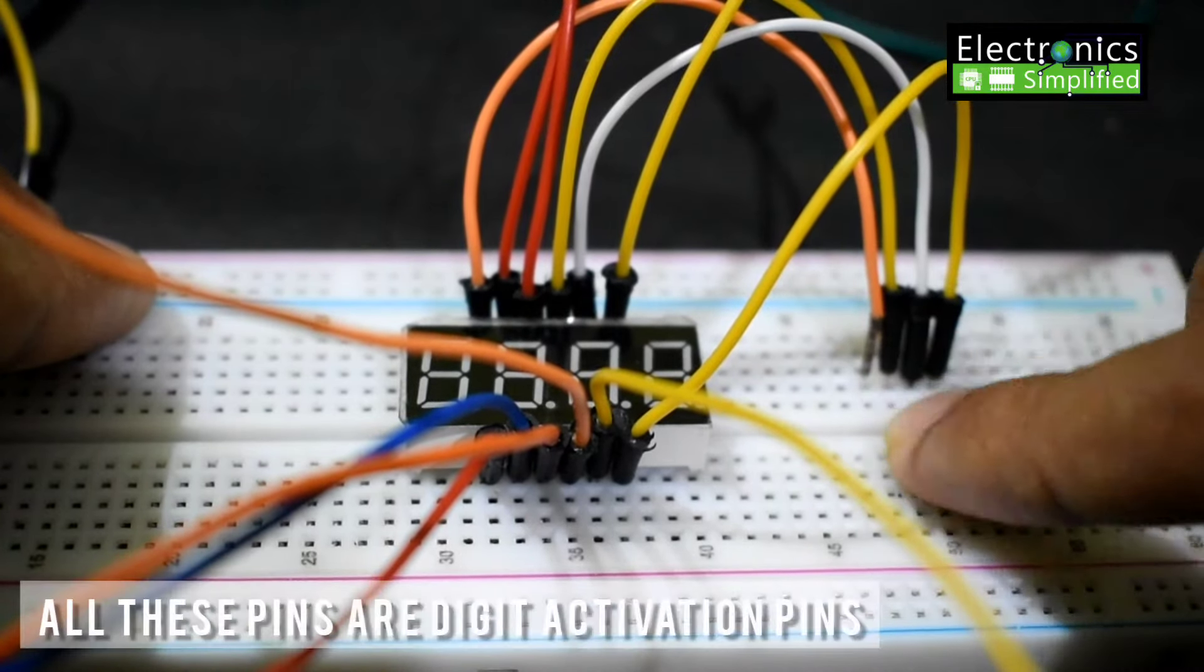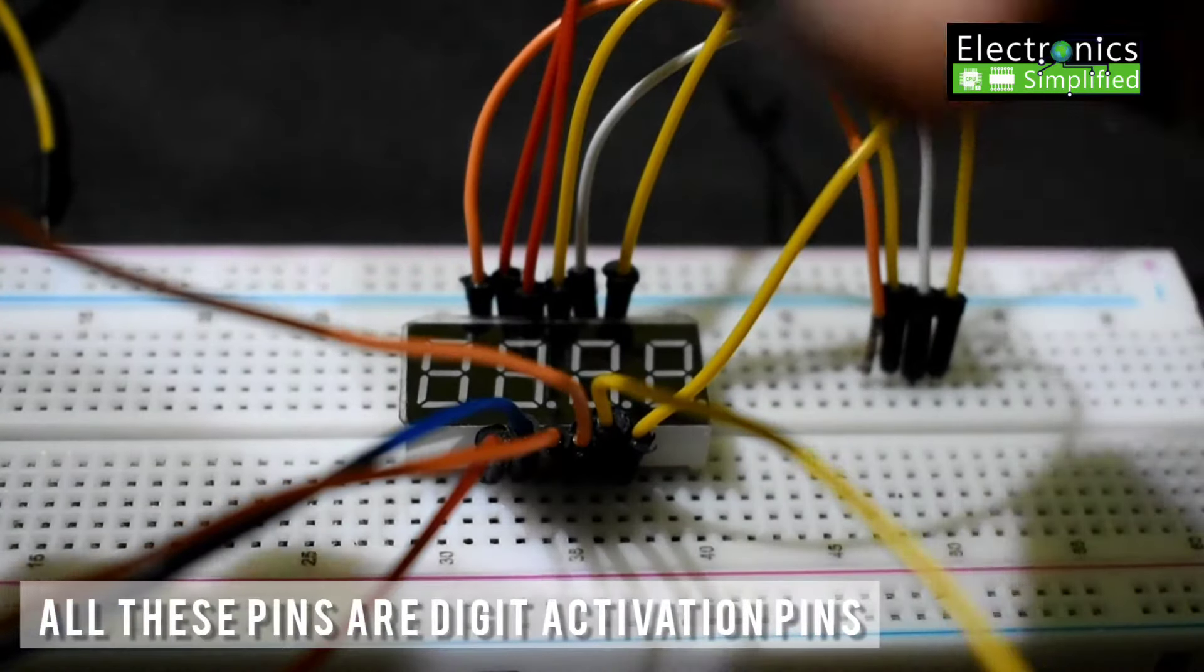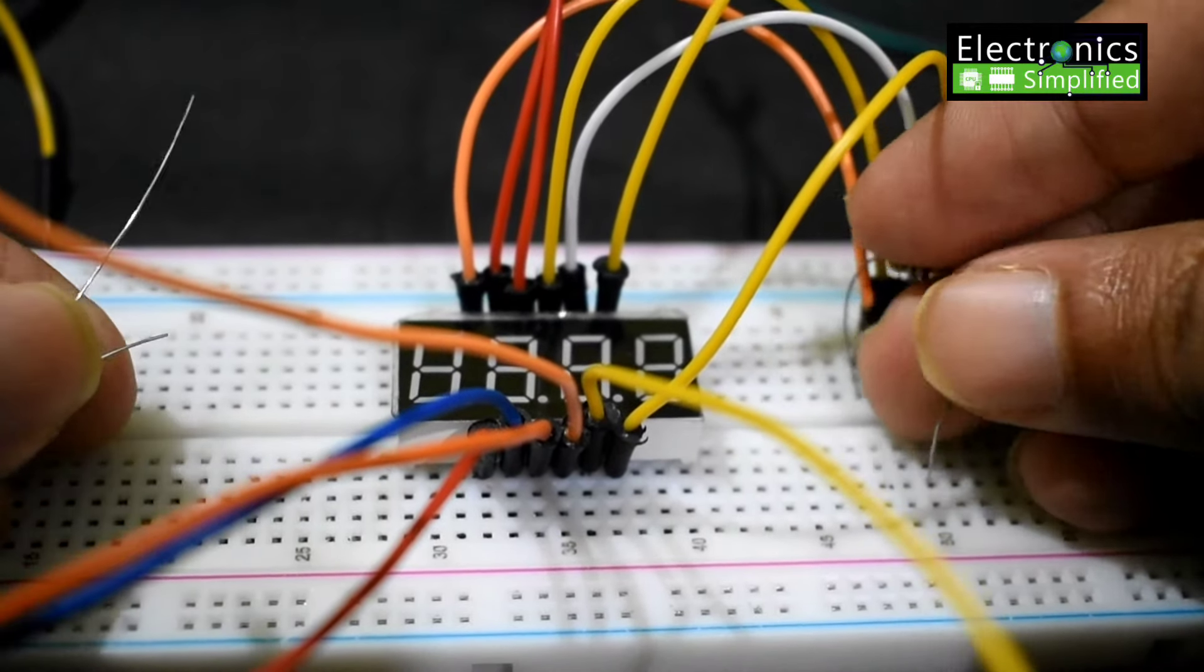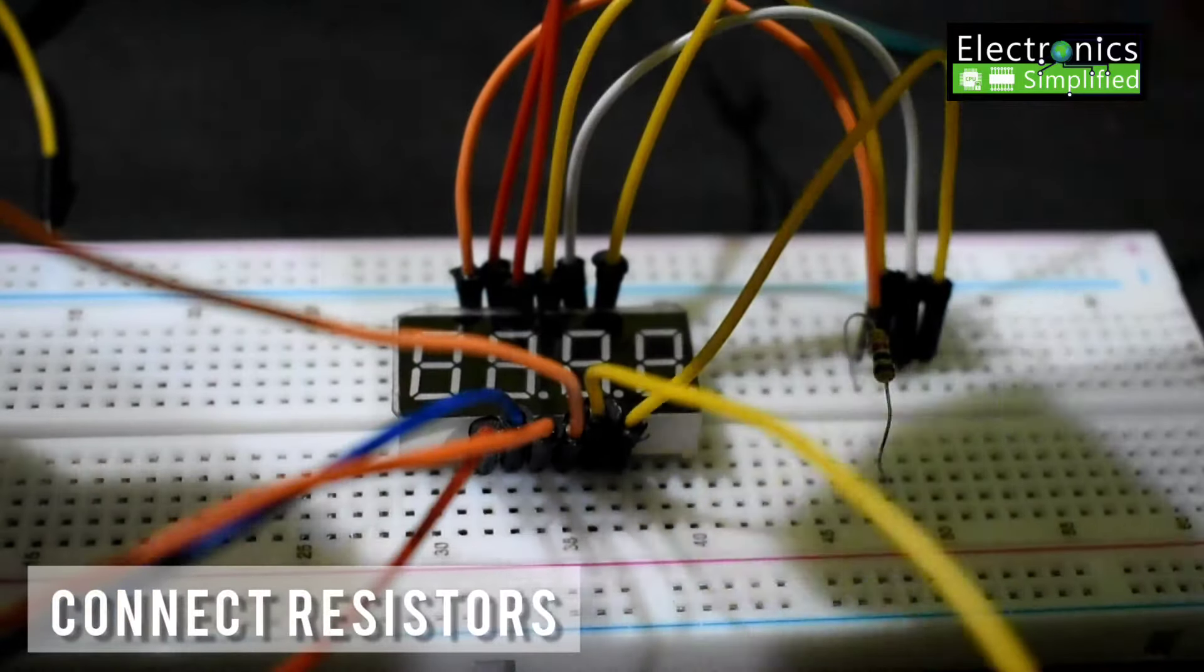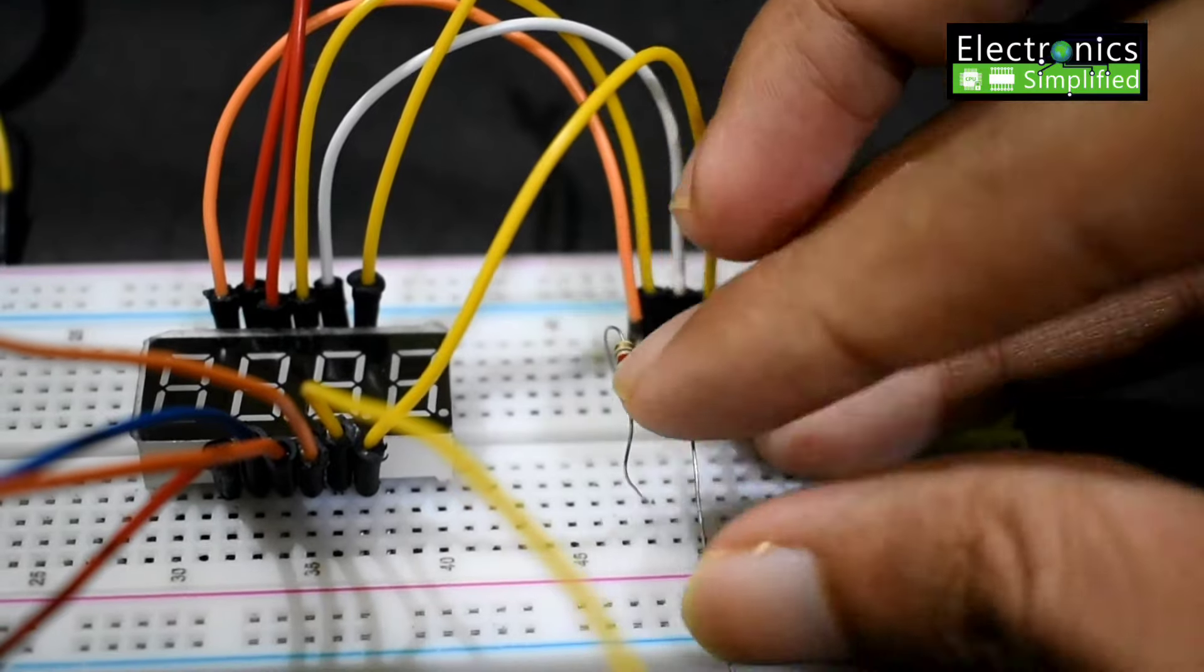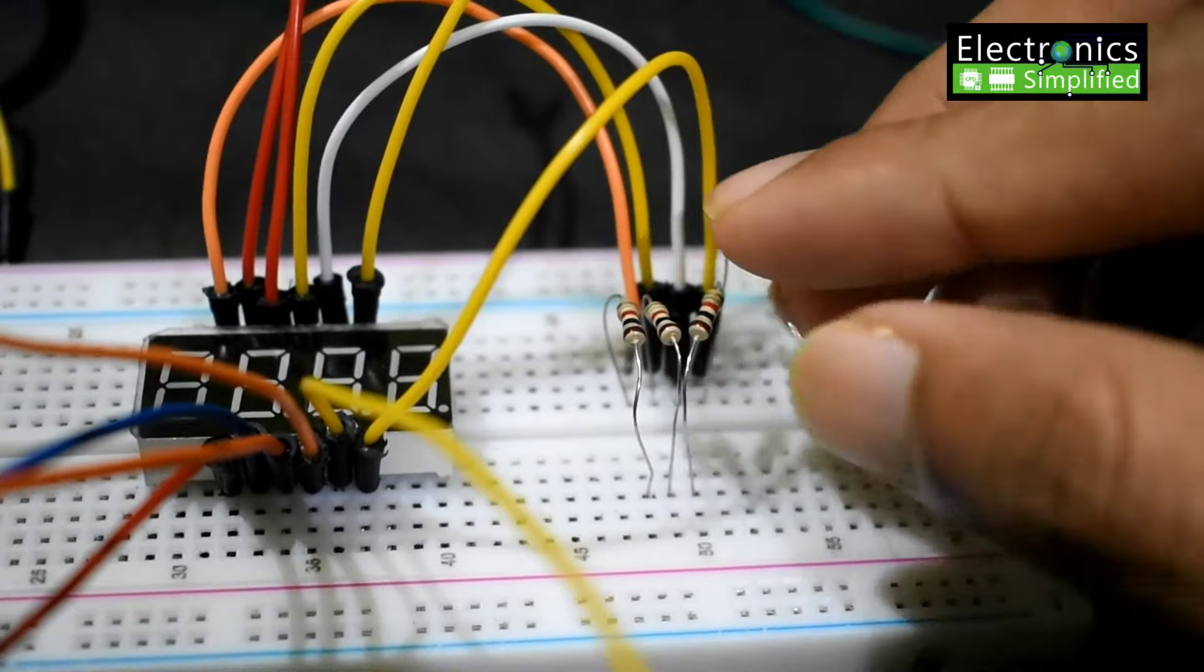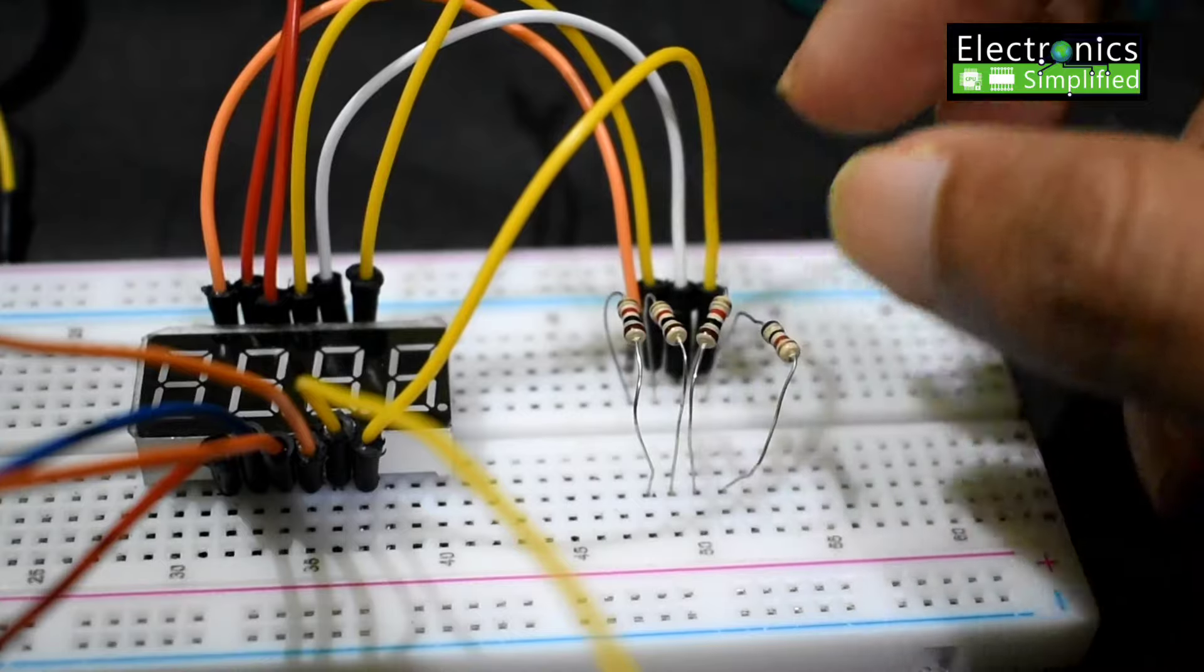So all my digit pins are here and I need to connect my resistors now. So let's connect our resistors to all the digit pins. So I will do them one by one. And once you are done, these resistors are connected in order to protect our displays. So they do not harm our display with the current that our Arduino keeps. There you go.